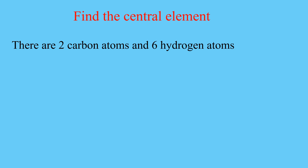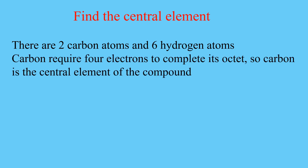There are two carbon atoms and six hydrogen atoms in ethane. Carbon requires four electrons to complete its octet, so carbon is the central element of the compound.